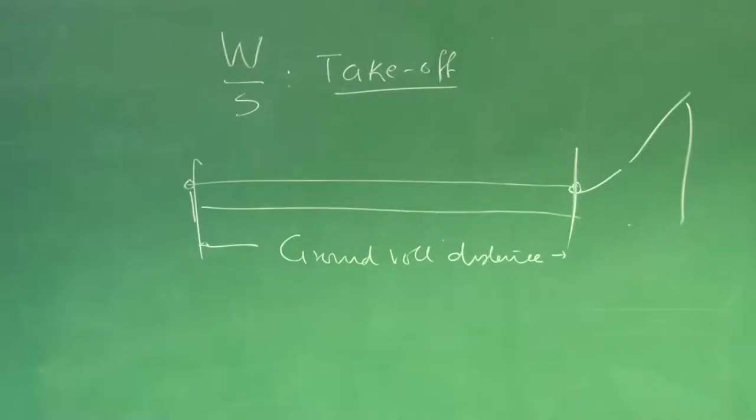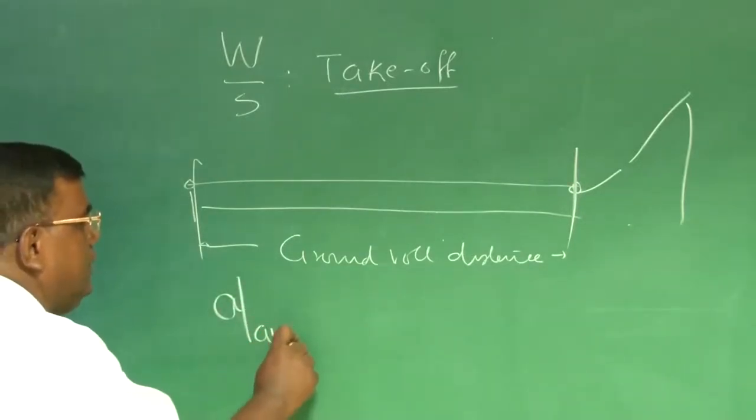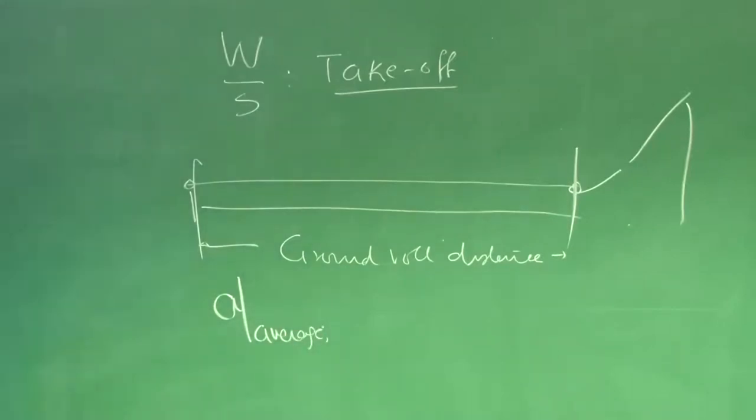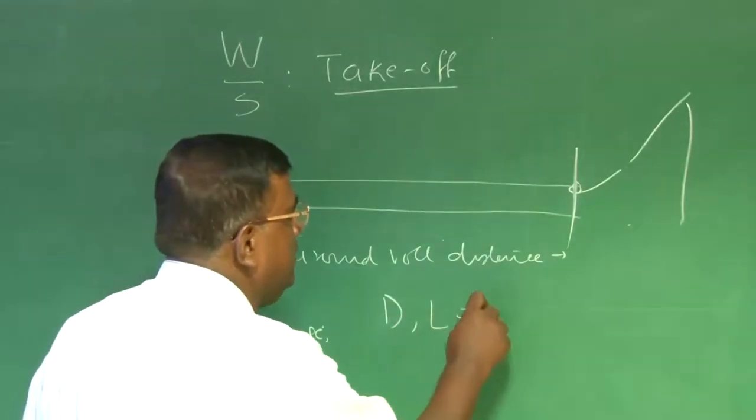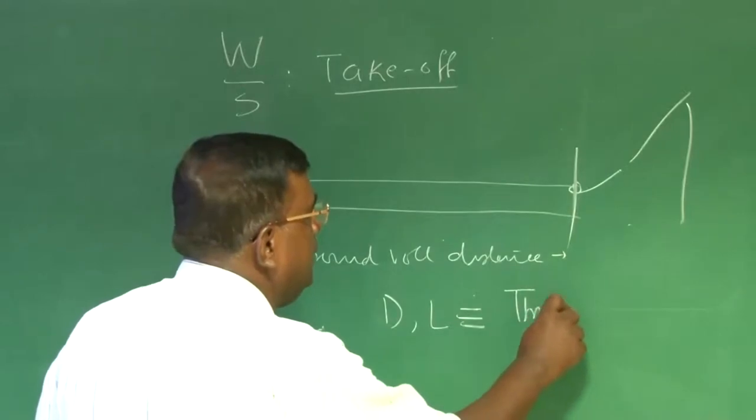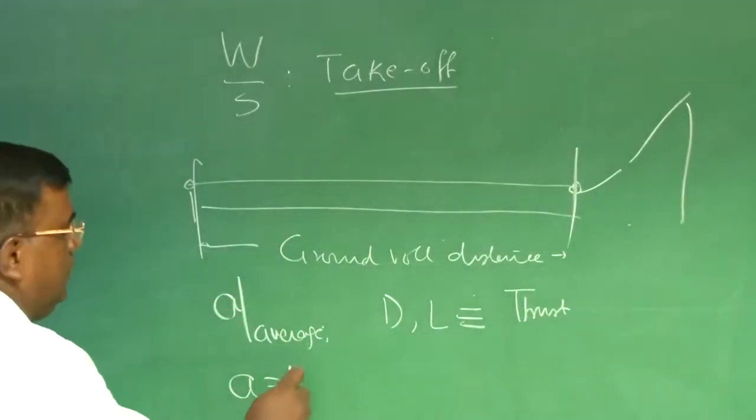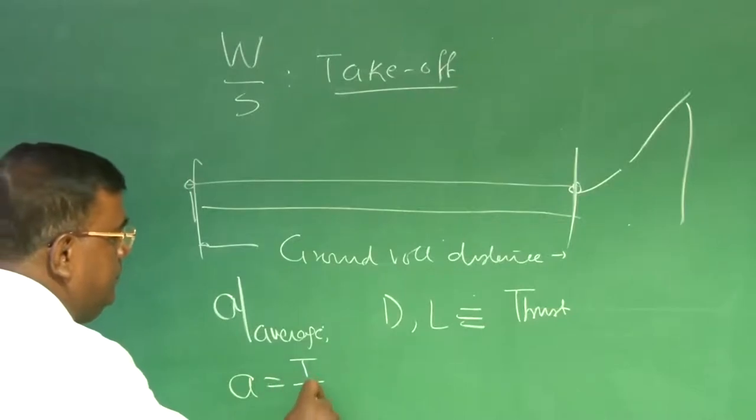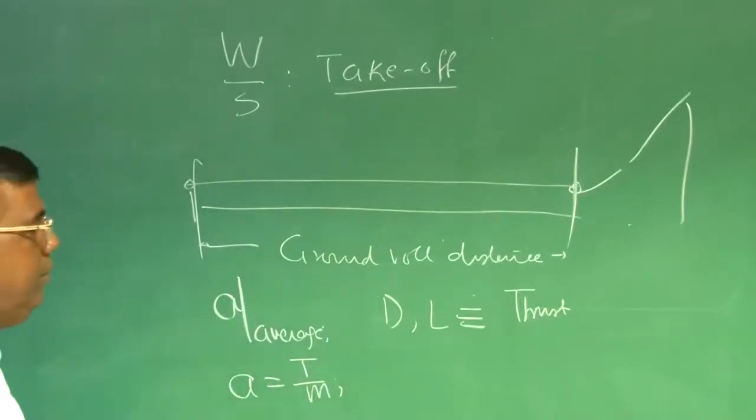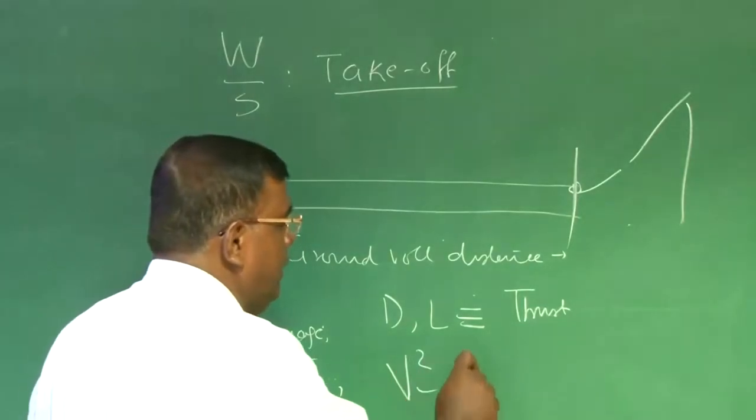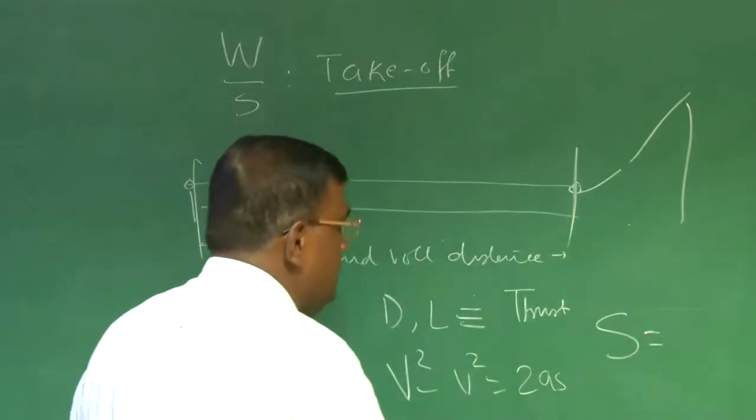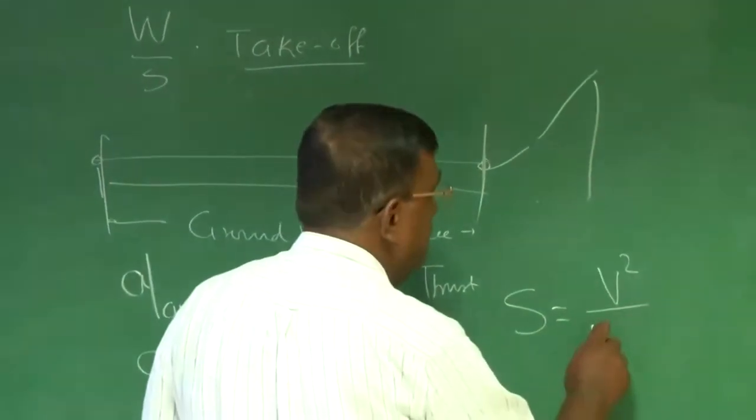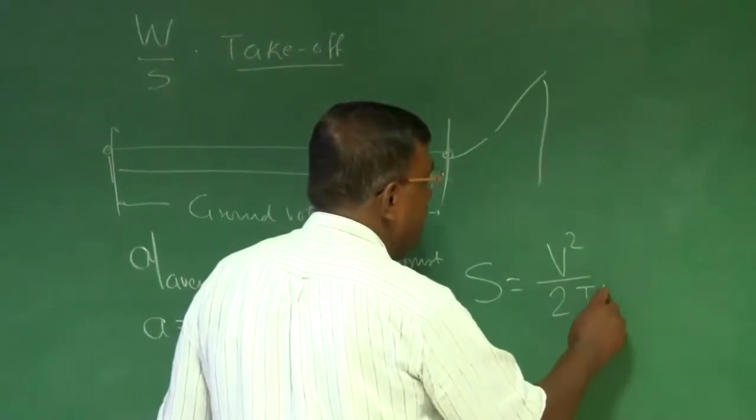We understand one thing: if I can somehow manage to approximate A as average acceleration and neglect drag and lift contribution as compared to thrust, which we have done, then I can write A is equal to T/m, and I can simply use v² - u² = 2as. So s = v²/2a, where a is T/m.